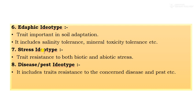The seventh type is stress ideotype. Its traits include resistance to both biotic and abiotic stresses — that is, cultivars should be suitable especially for biotic and abiotic stresses. The eighth type is disease or pest ideotype. It includes traits for resistance to concerned diseases or pests. These are the different types of ideotypes.